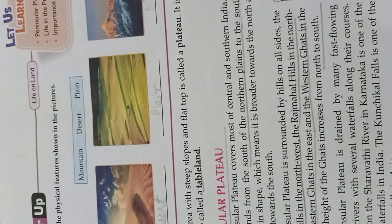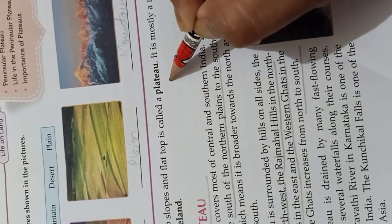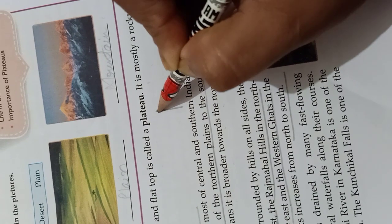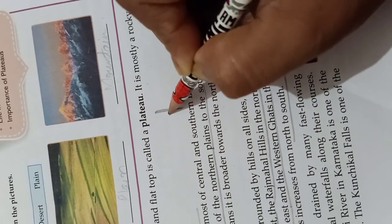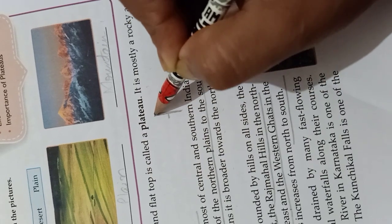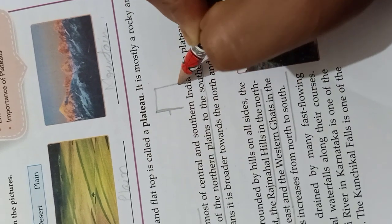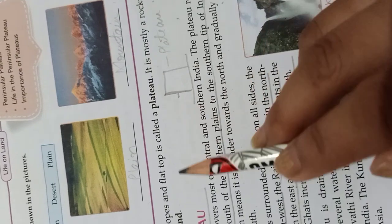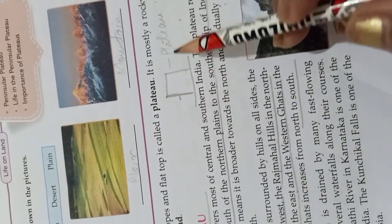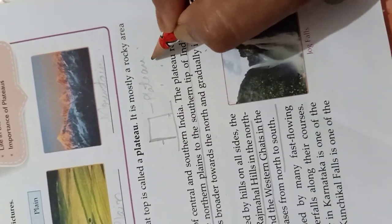So it is a raised area with very steep slopes. These are the slopes — raised area, steep slopes, and flat tops are called a plateau. It is mostly rocky and it is also called table land. Plateau and table land — don't forget.